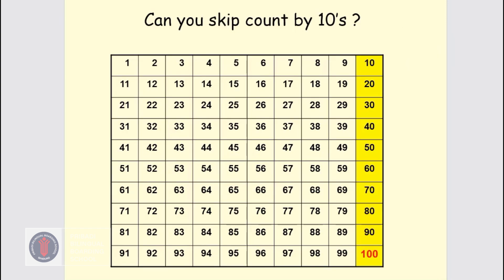Now let's count by 10's. Repeat after me: 10, 20, 30, 40, 50, 60, 70, 80, 90, 100. Could you please do it again? 10, 20, 30, 40, 50, 60, 70, 80, 90, 100. All numbers end with 0 when counting by 10's.